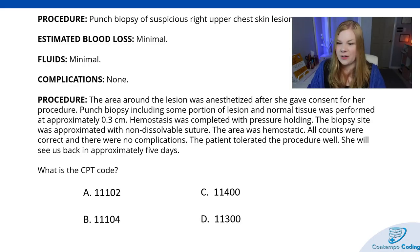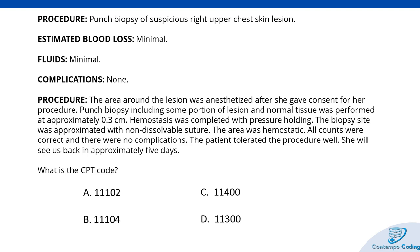Now let's get into case studies. Case 1: A patient had a punch biopsy of a suspicious right upper skin lesion of the chest, minimal blood loss. The area was anesthetized, consent was obtained. A punch biopsy including some portion of lesion and normal tissue was performed, approximately 0.3 centimeters. Hemostasis was completed with pressure holding. The biopsy site was approximated with non-dissolvable suture. All counts were correct and there were no complications. The patient tolerated the procedure well and will follow up in approximately five days.